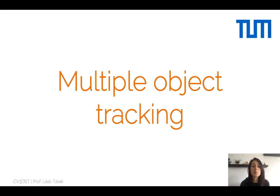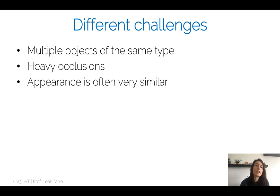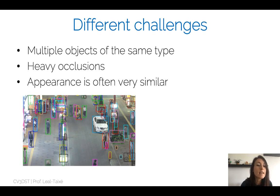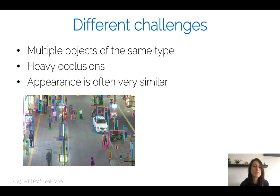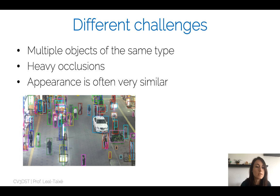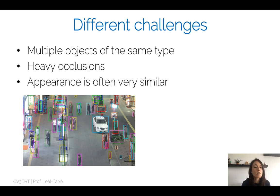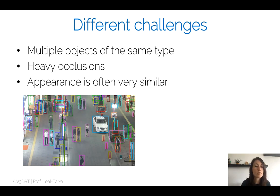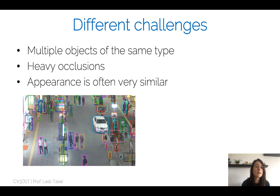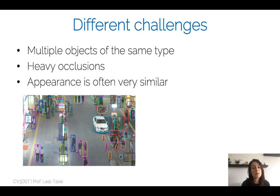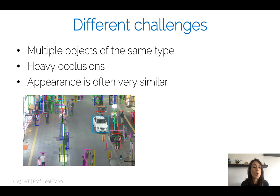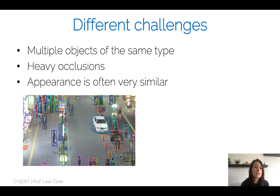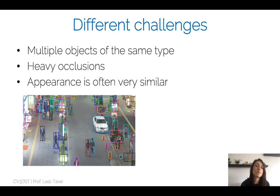Welcome to the second lecture on multiple object tracking. Remember that we started in the last lecture with the challenges that multiple object tracking gives us, which are different than for single object tracking. In multiple object tracking, we look at scenes where we have different instances of the same semantic class, for example different pedestrians. The main challenge is heavy occlusions among pedestrians and by static objects, and since their appearance is very similar, building an appearance model is quite difficult.